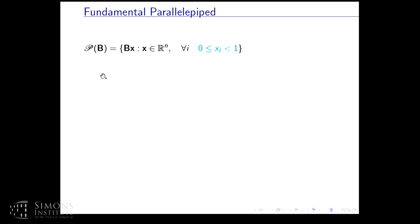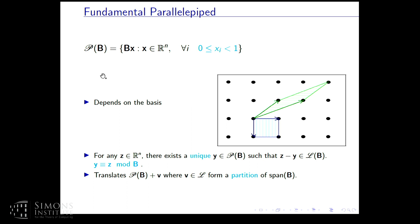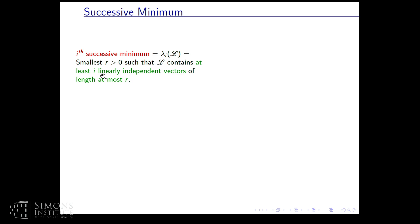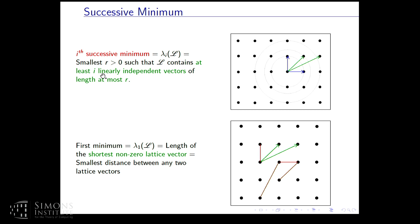A fundamental parallelopiped, given a basis of a lattice, is a combination of the basis vectors where the coefficients lie between 0 and 1. This depends on the basis — this figure shows two fundamental parallelopipeds of the same lattice. For any vector on the real plane, there exists a unique vector in the fundamental parallelopiped such that their difference is a lattice vector, and we call this operation Y congruent to Z modulo B. The translates of the fundamental parallelopiped form a partition of the span of the lattice. The i-th successive minimum is the smallest r such that the lattice contains at least i linearly independent vectors of length at most r.